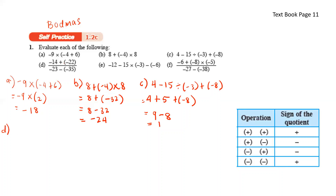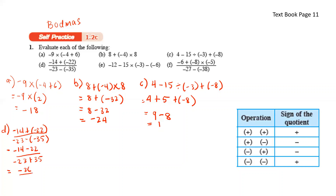For fraction operations, always do numerator and denominator separately, then solve the fraction. Numerator: negative 14 plus negative 22 — positive and negative is negative — so negative 14 minus 22 gives negative 36. Denominator: negative 23 minus negative 35 — negative and negative gives positive — so negative 23 plus 35 gives 12. Result: negative 36 over 12, which is negative 3.